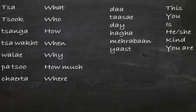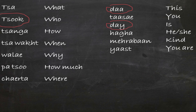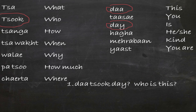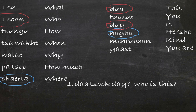We have the word 'this', we have the word 'who', and we have the word 'is', and we can make a sentence. Who is this? Let's say 'where is he or she' — we have the word 'he or she', we have the word 'where', and we have the word 'is'.